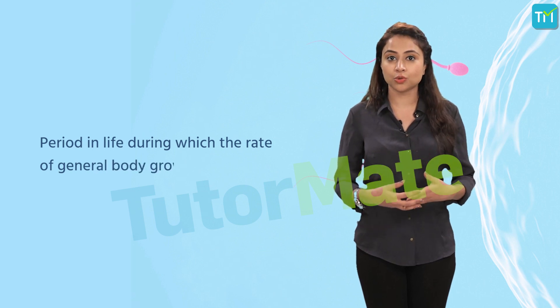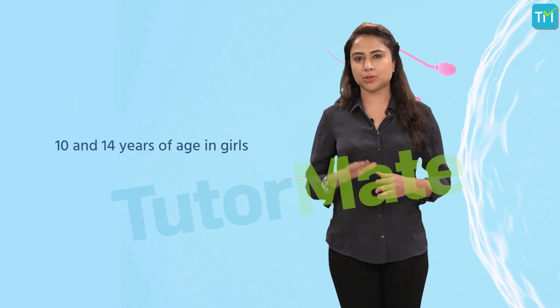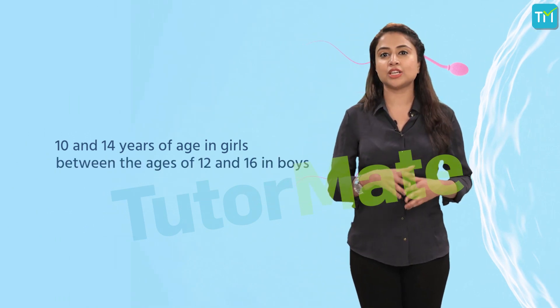The reproductive organs of humans are primary at the time of birth but develop upon reaching puberty. Puberty is a period in life during which the rate of general body growth begins to slow down and reproductive tissues begin to mature. Little children grow very fast and their facial features change a lot until they reach their teens, but after that their growth slows down. This period is also when sex hormones are produced. Usually girls reach puberty between 10 and 14 years of age, and boys reach puberty between the ages of 12 to 16 years.